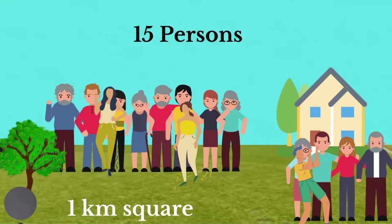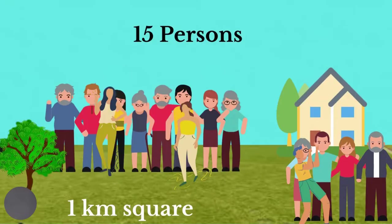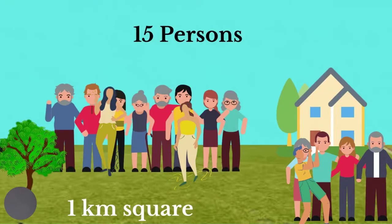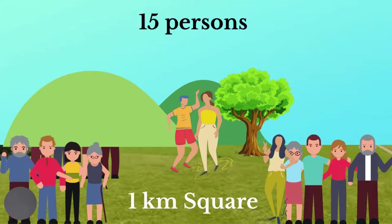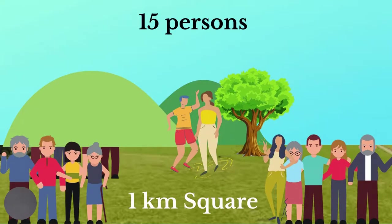Let us look at these two places. Notice that for both places the land size is the same and the number of persons is also the same, which means that both places have the same population densities. However, the distribution of people over the two areas is quite different. In one area, we can see people distributed in three groups, while in the other area they are distributed in two groups.